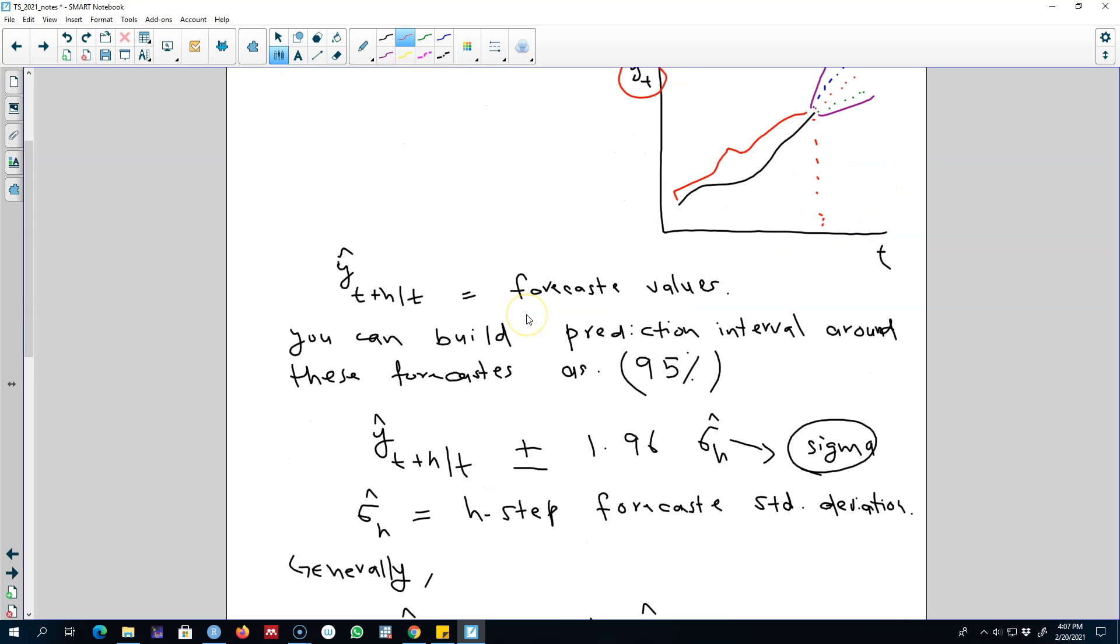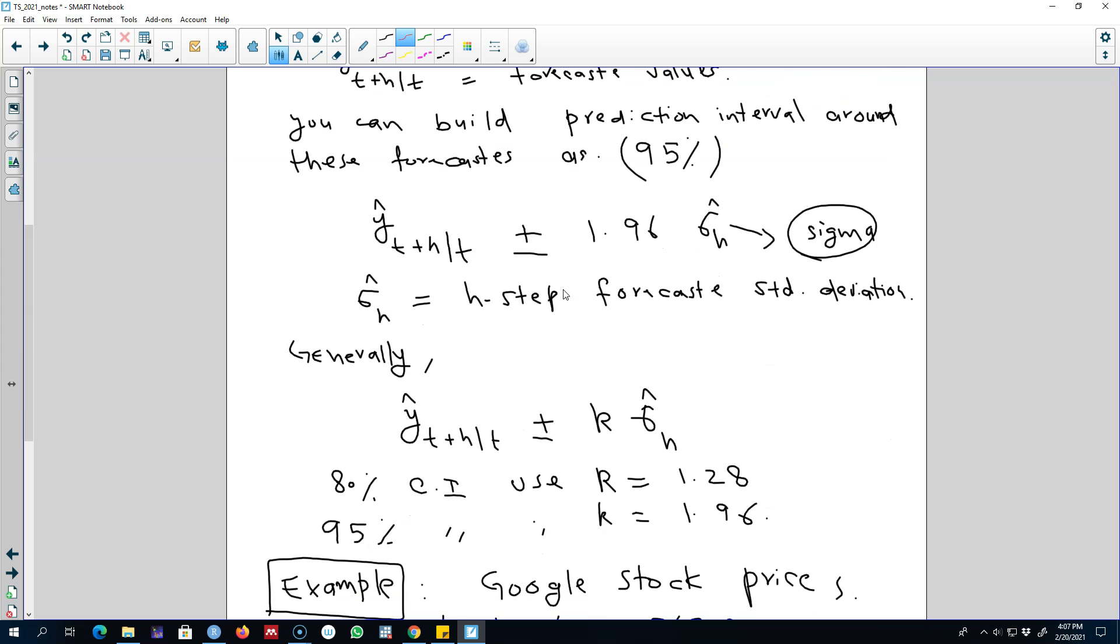What we can do is calculate prediction intervals around our point estimates. The formula that we use to calculate these prediction intervals is plus minus 1.96 times sigma. This will give us a 95% confidence interval.